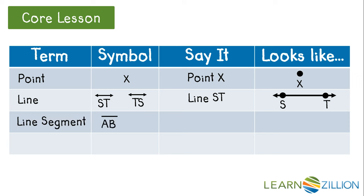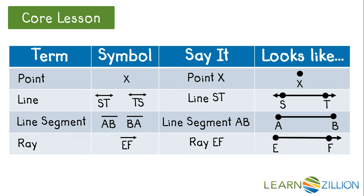A line segment, we would label AB or BA. It doesn't matter what letters you choose. We could call it line segment AB or line segment BA. And it might look like this. For a ray, it has to start with the endpoint first and then any point after that. We'd call this ray EF. And it looks like this.